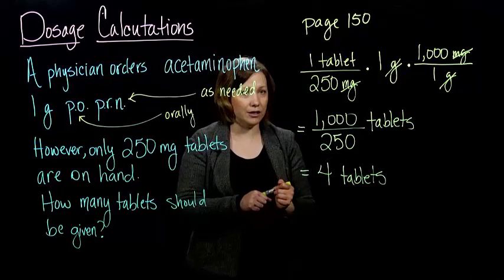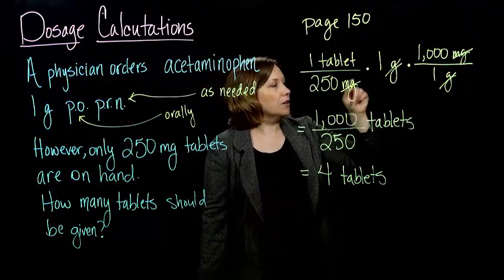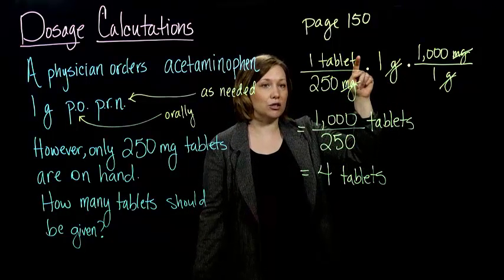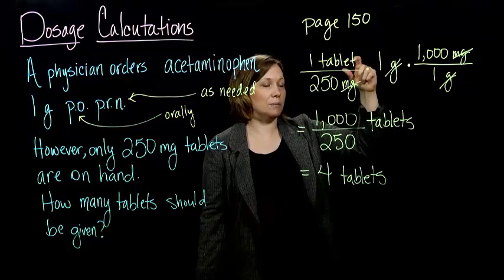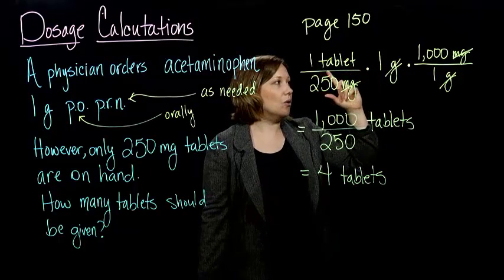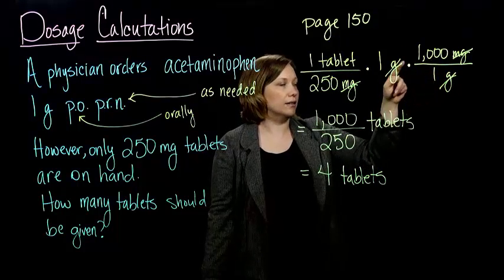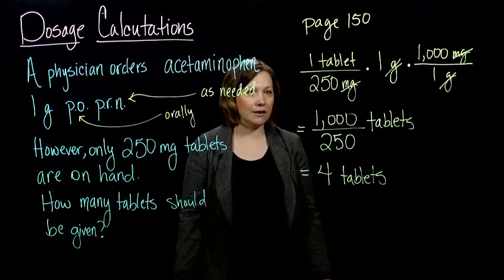So that's all there is to it. The tricky thing about this one was if you get to a point where your units aren't going to cancel out and leave you with what you want, either you've maybe inverted and you've got to flip your fraction for your conversion factor, or you've got to do a little bit of converting somewhere in there. So that's it, four tablets is our answer.